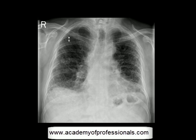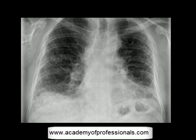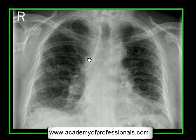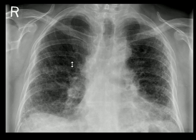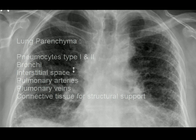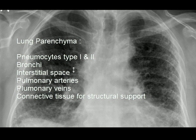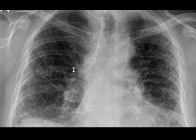Let's look at another chest X-ray and examine the lung parenchyma. Lung tissue is made up of alveoli, pneumocytes type 1 and type 2 cells, bronchi, pulmonary arteries and veins, and also interstitium — the space between alveoli that contains tiny blood vessels, lymphatics, interstitial fluid leaked from blood vessels around alveoli, and connective tissue which provides structural support to the lung.